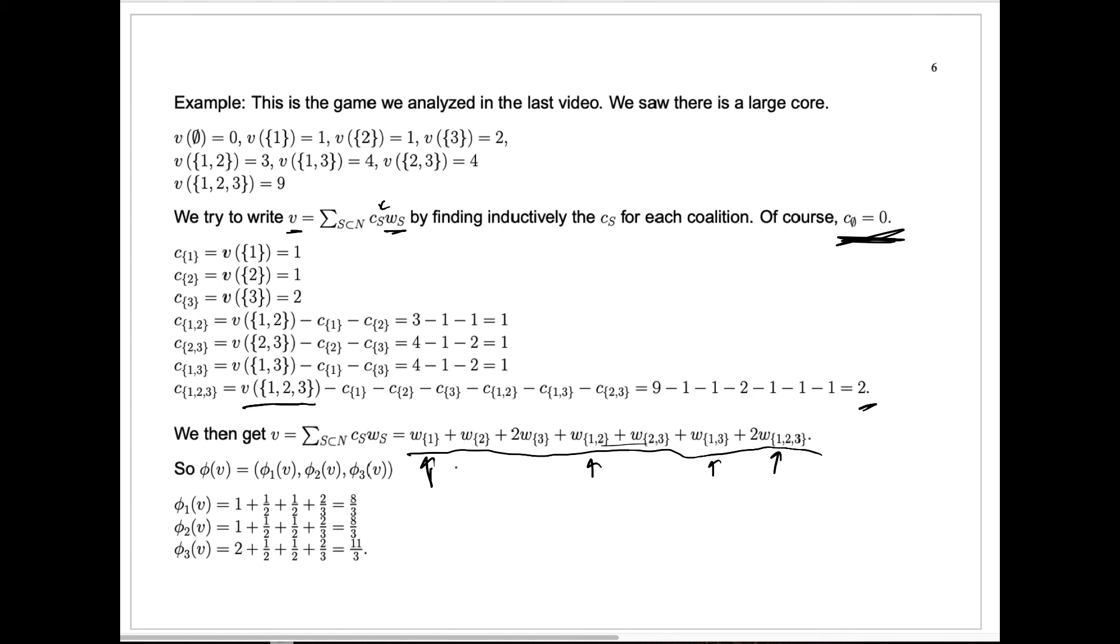For φ₂, we look instead at the sets that contain 2, and we do the same thing, and we get here the same computation. Applying φ to each one, you get 1 plus 1 half plus 1 half plus 2 times 1 third, or 8 thirds.